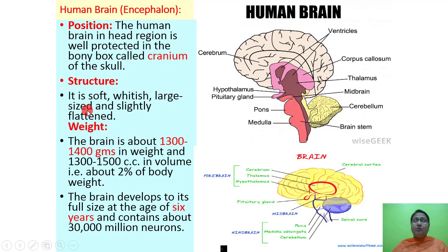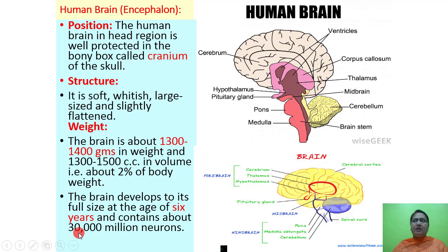Structure of the brain: it is soft, whitish, large in size and slightly flattened. Weight: it is about 1300 to 1400 grams in weight and 1300 to 1500 cc in volume. It is about 2% of the body weight. The brain develops to its full size at the age of 6 years and contains about 30,000 million neurons.